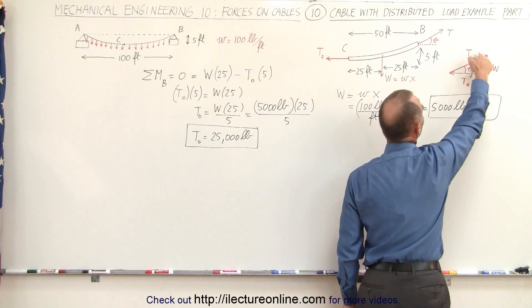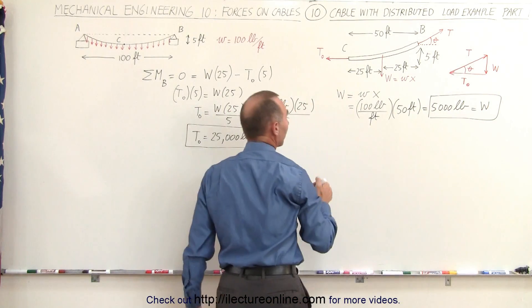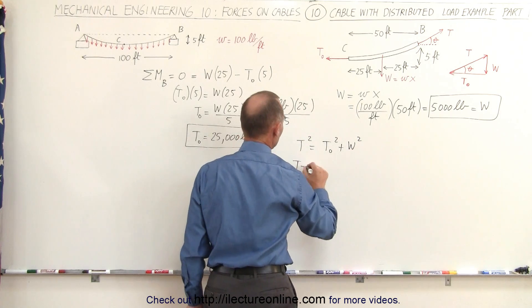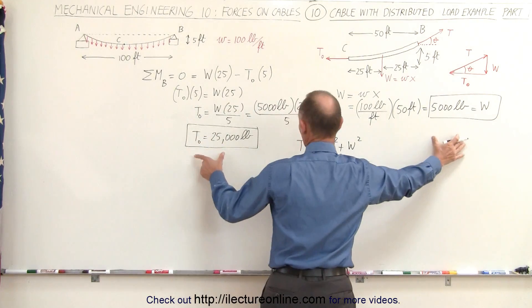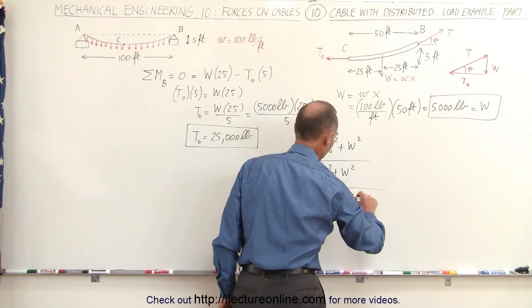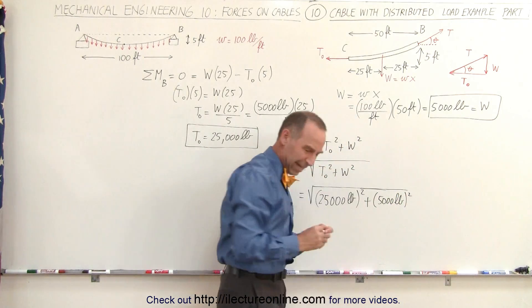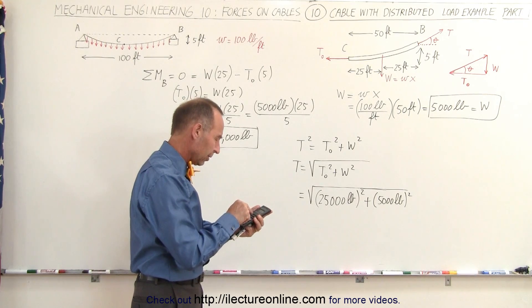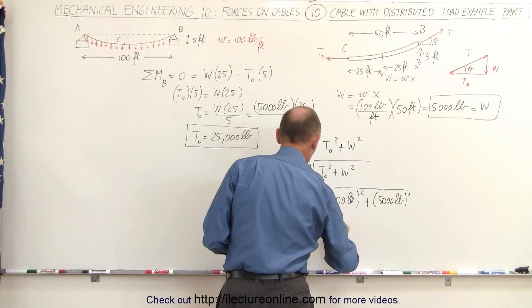Now that we have T-sub-zero and the total load W, we can find the tension T at the attach point B. The forces form a right triangle, so T-squared equals T-sub-zero squared plus W squared. Taking the square root of 25,000 squared plus 5,000 squared gives T approximately equal to 25,500 pounds.